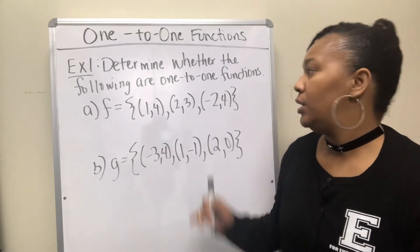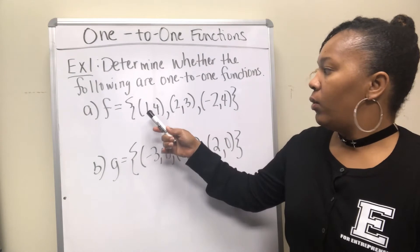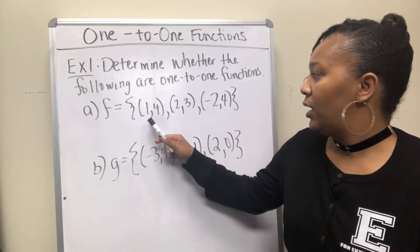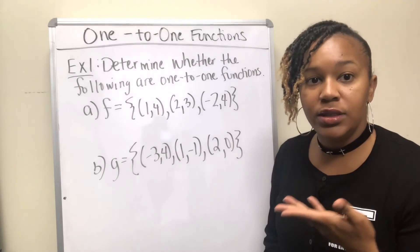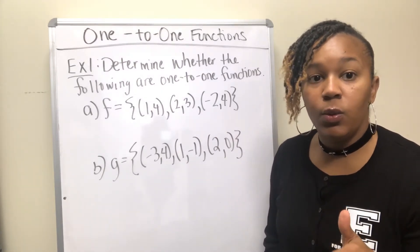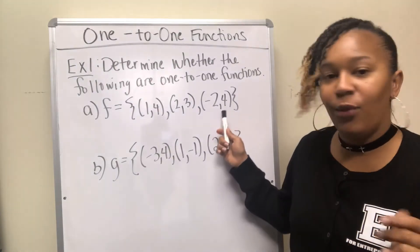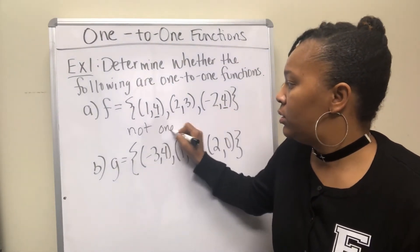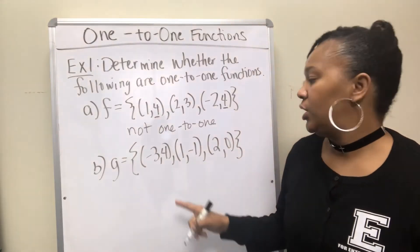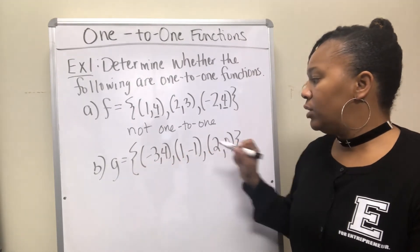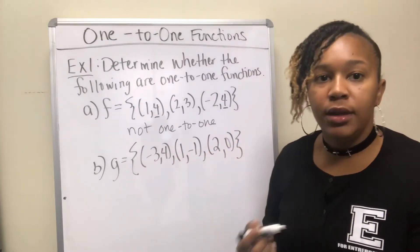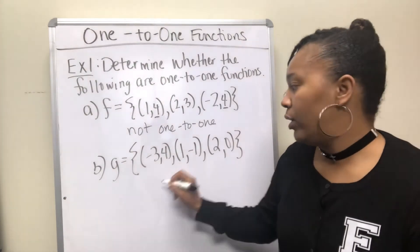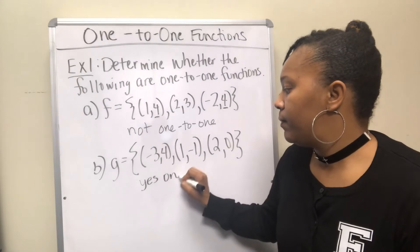For example one, we have two sets of ordered pairs. For F, we have the points (1,4), (2,3), and (-2,4). The X values — 1, 2, and -2 — have no repeats, so this is a function. But the Y values are 4, 3, and 4, so we have a repeating Y. Therefore this is not one-to-one. For G, we have (-3,4), (1,-1), and (2,0). No repeating X's and no repeating Y's, so G is indeed a one-to-one function.